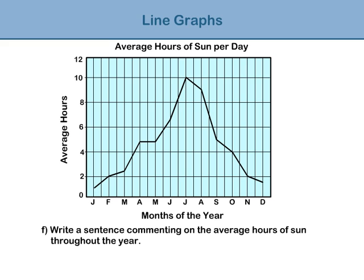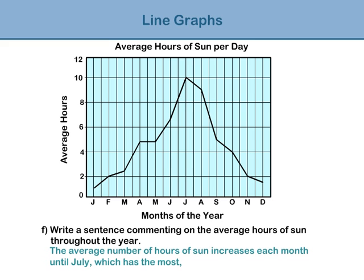Question f: Write a sentence commenting on the average hours of sun throughout the year. We must look at the graph as a whole and comment on any trend or pattern we see. The average number of hours of sun a day increases each month — we can see this as the graph slopes steadily upwards until July, which has the most. Then it starts decreasing again towards the end of the year, as the graph starts sloping down again.